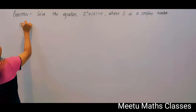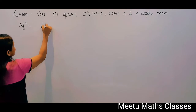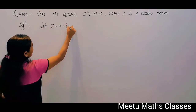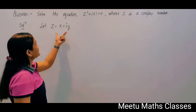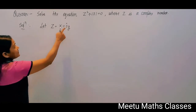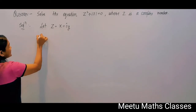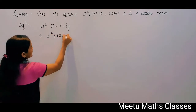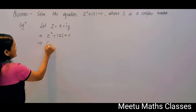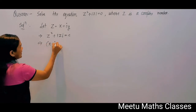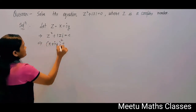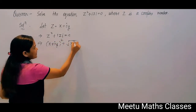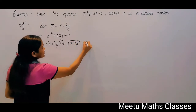Let us start with: let z = x + iy. Let z be this complex number. This complex number must satisfy the equation, that implies z² + |z| = 0, and z = x + iy, so (x + iy)² + √(x² + y²) = 0.